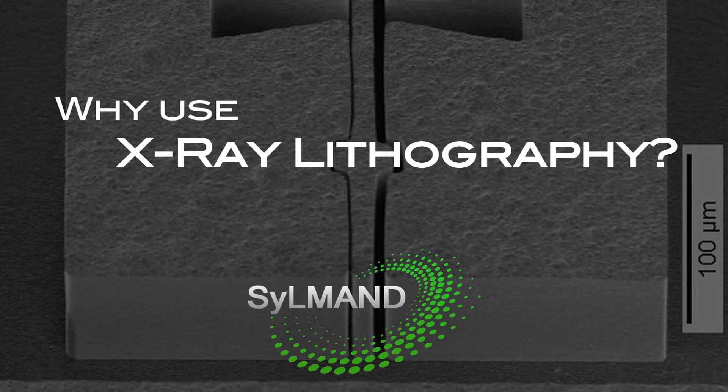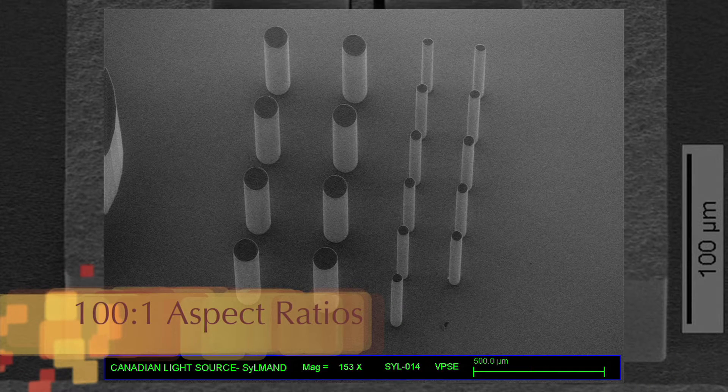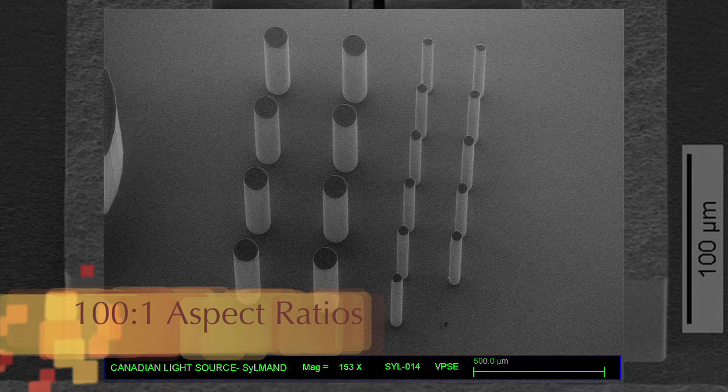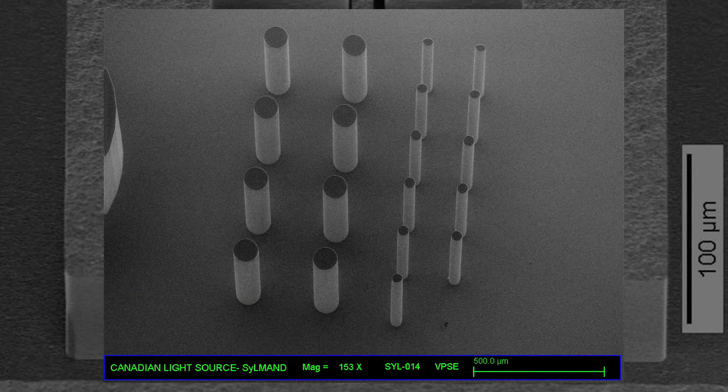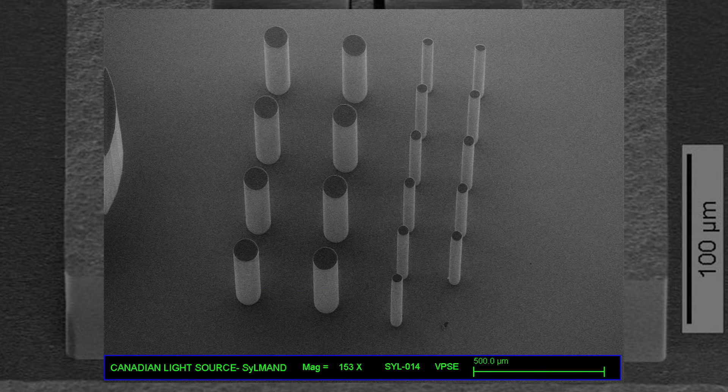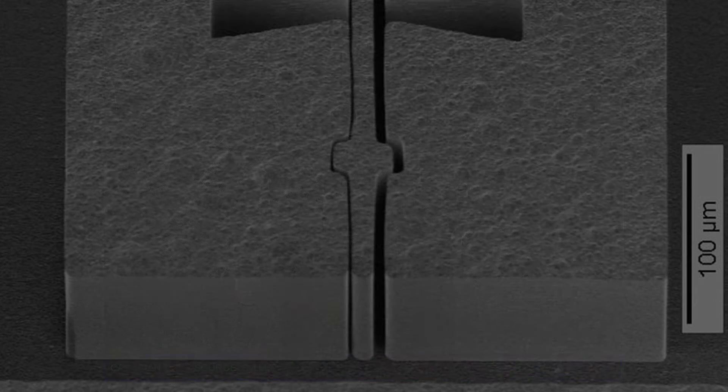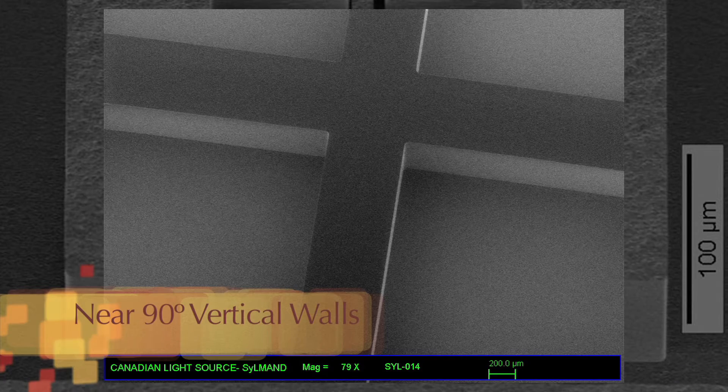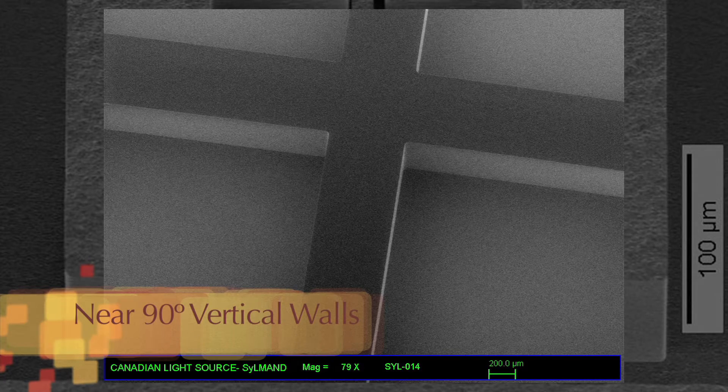Let's look at some of the unique advantages that X-ray lithography offers. First, the capability to fabricate tall structures with up to 100 to 1 aspect ratios. Aspect ratios are typically defined as the ratio of structure height to feature width. Second, smooth and near 90 degree vertical sidewalls.